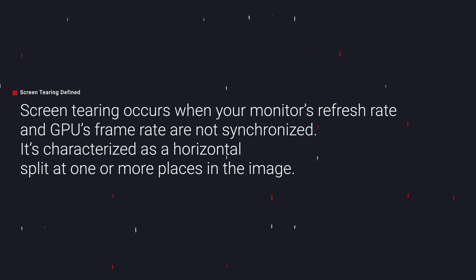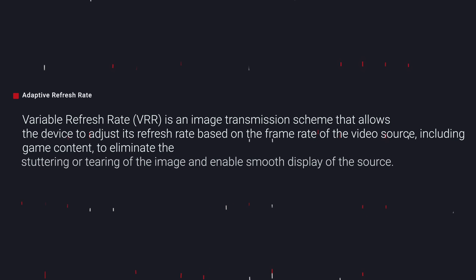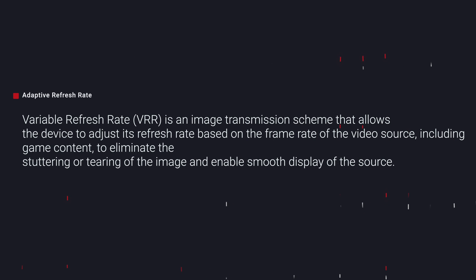Hopefully you now have a much better understanding of what adaptive sync is and why it's so necessary, especially in gaming. Quick recap: screen tearing occurs when there's an inconsistent frame rate between what your computer is producing and what your monitor is capable of, producing effects like stuttering, jittering, and split frames on an image. Technologies like vSync, G-Sync, and FreeSync can help alleviate or entirely eliminate those issues.